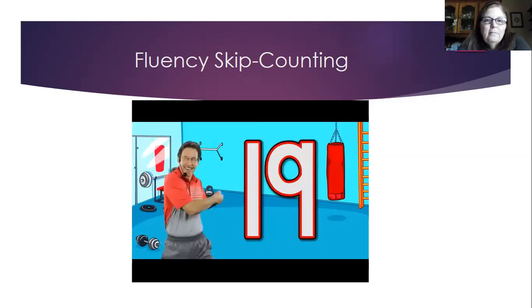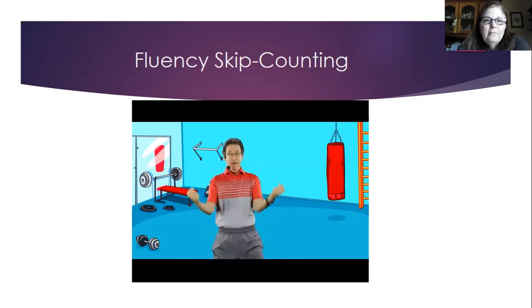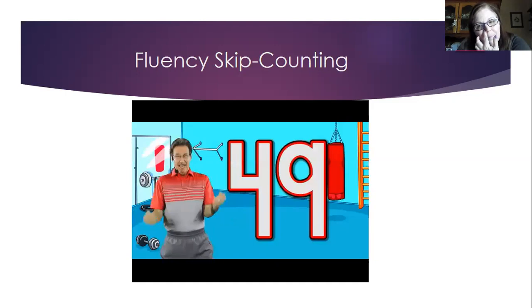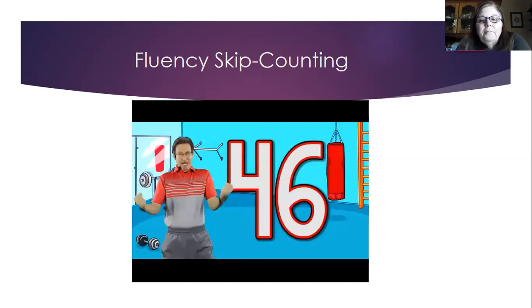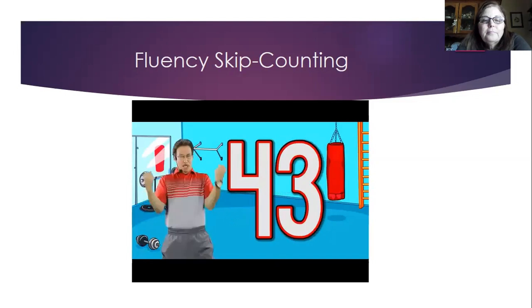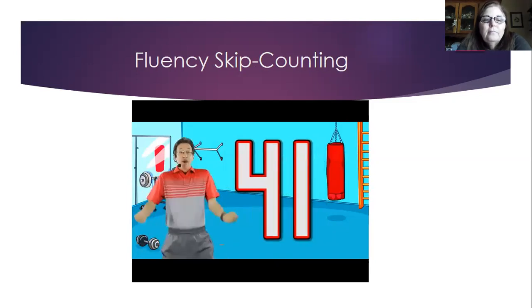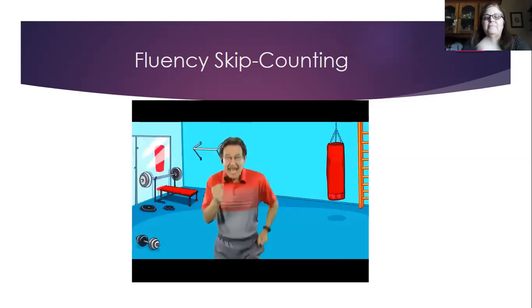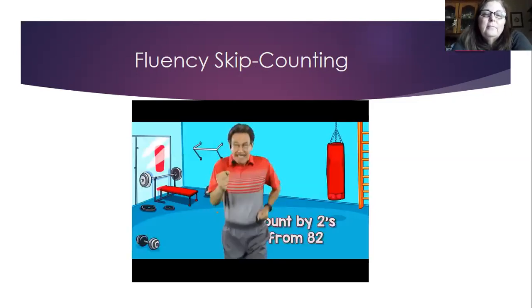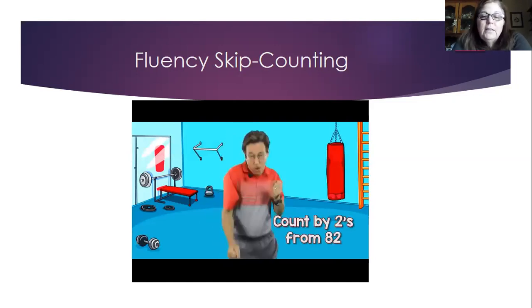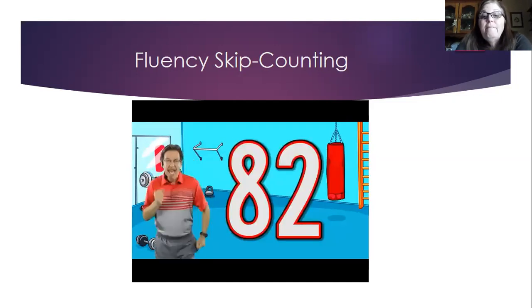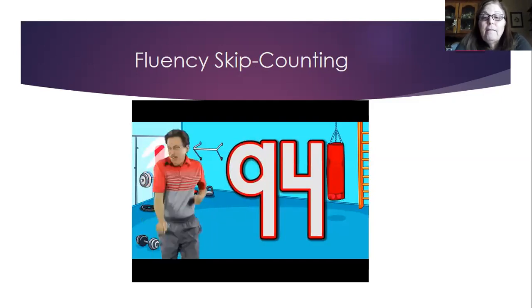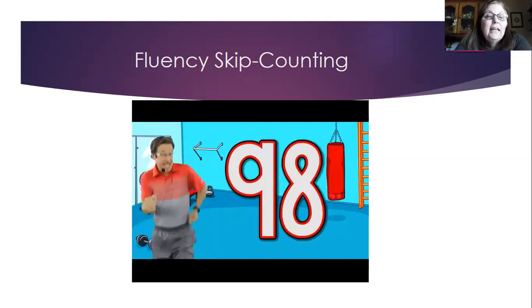Let's do arm curls — work your biceps now. Count down by ones from forty-nine. Work out and count: forty-nine, forty-eight, forty-seven, forty-six, forty-five, forty-four, forty-three, forty-two, forty-one, forty. Jog in place — work your cardiac muscle now. Count by twos from eighty-two. Work out and count: eighty-two, eighty-four, eighty-six, eighty-eight, ninety, ninety-two, ninety-four, ninety-six, ninety-eight, one hundred.